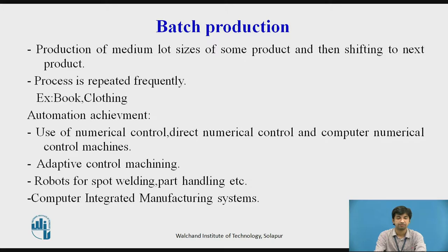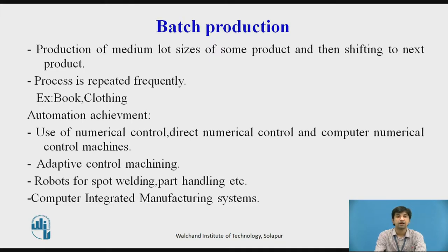Batch production is the production of medium lot sizes of a product before shifting to the next product, where the process is repeated frequently. Examples include books or clothing. Automation is achieved through the use of numerical control, direct numerical control, and computer numerical control machines, as well as adaptive control machining, robots for spot welding and part handling, and computer integrated manufacturing systems.